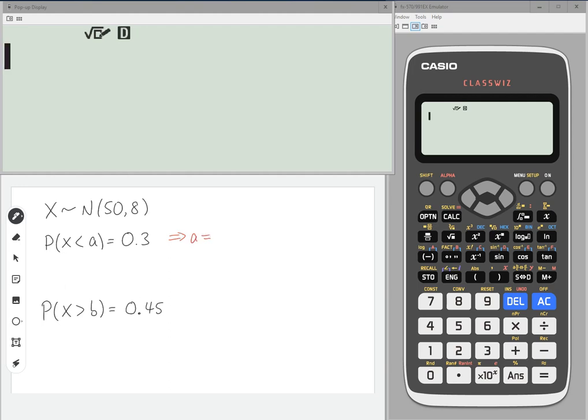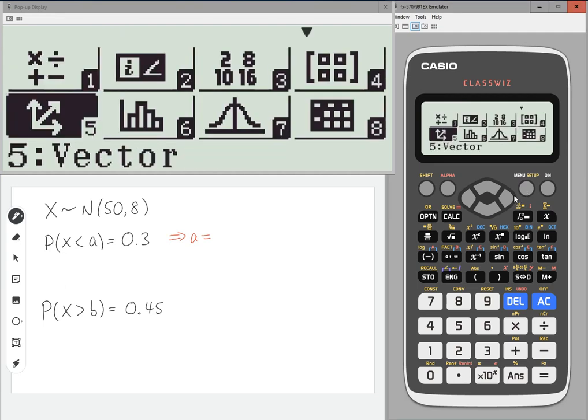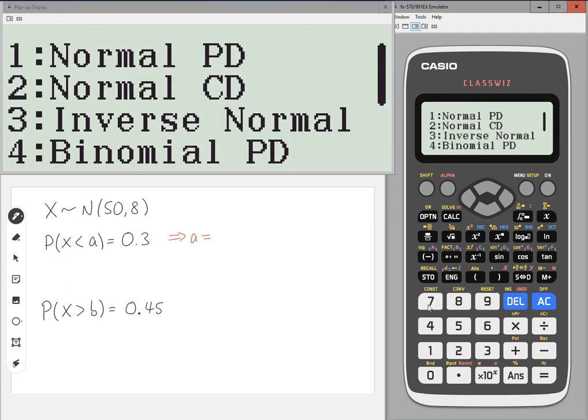So I've been given the probability and I need to work backwards. You go to menu and then you scroll down to number 7. And we want inverse normal, number 3.